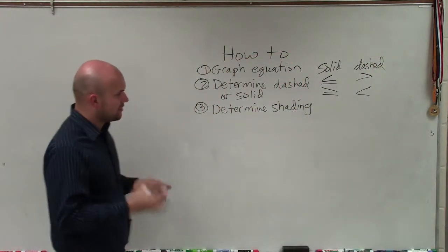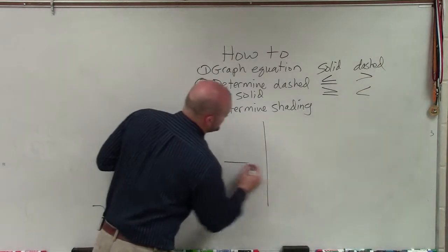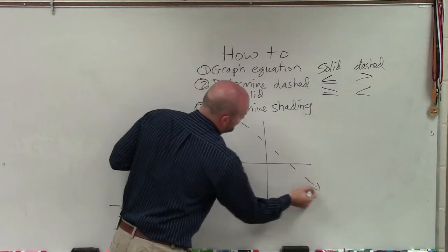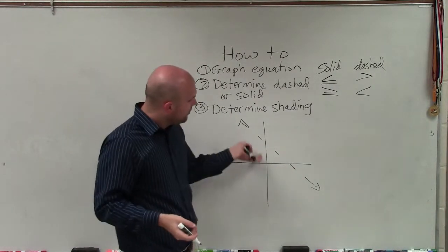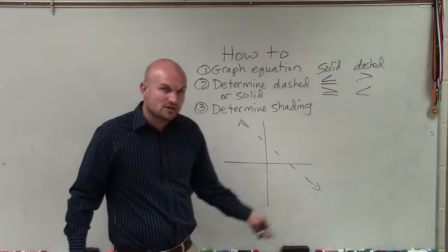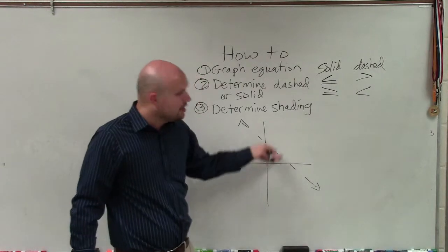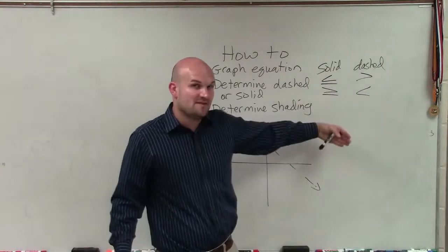After we determine our graph, the next thing we want to do is determine the shading. Let's say we have a graph that looks like this. We know the points on this dashed line are not part of our solution. But what about all the points below our line? And what about all the points above our line?